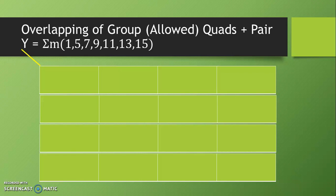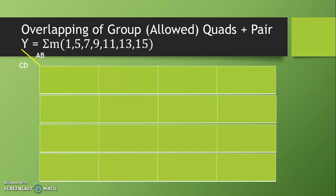We take another example for overlapping of the group. We have been given minterms 1, 5, 7, 9, 11, 13 and 15. Now let us prepare K-map with 16 cells. As usual, we write ABCD variables with numbers 00 01 11 10 on both sides.